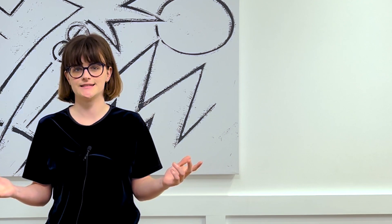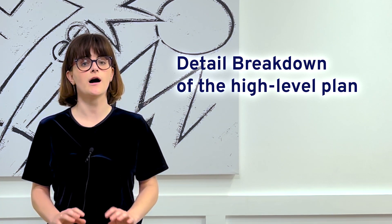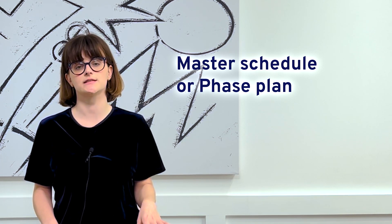So, what is a look-ahead? To put it simply, it's a detailed breakdown of your high-level plan, which can often be called a master schedule or a phased plan. A look-ahead zooms in on what is happening in the near future — sometimes looking at the next three weeks, sometimes looking at the next 12 weeks, or anything in between. This focus lets teams detail out what actually needs to happen in order for different parts of the project to progress, which allows them to prepare goals and activities for the next few weeks.